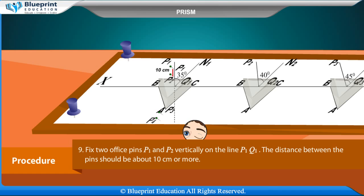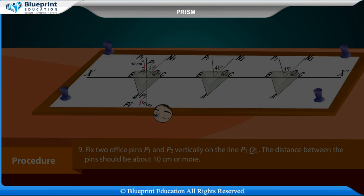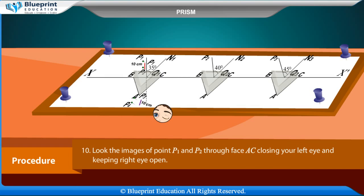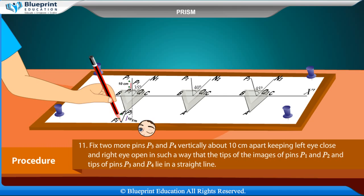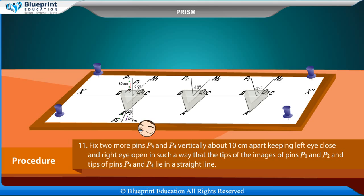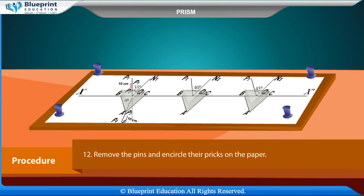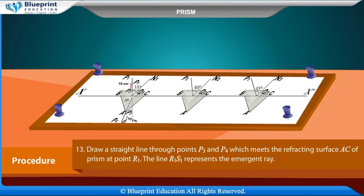Mark the boundary of the prism with a pencil. Fix two office pins P1 and P2 vertically on the line P1Q1; the distance between the pins should be about 10 centimeters or more. Look at the images of P1 and P2 through face AC, keeping the left eye closed and the right eye open. Fix two more pins P3 and P4 vertically about 10 centimeters apart so that the tips of the images of P1 and P2 and the tips of P3 and P4 lie in a straight line.